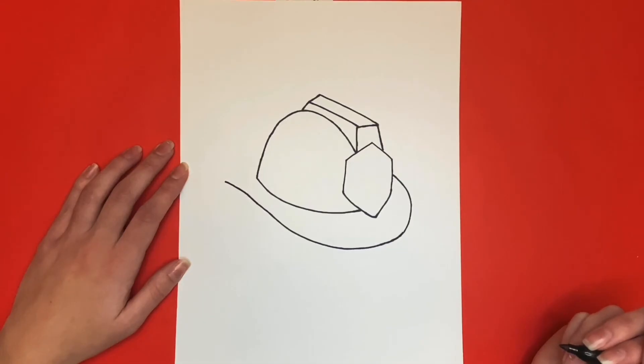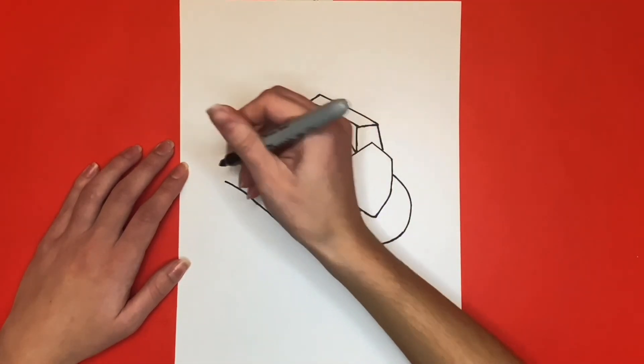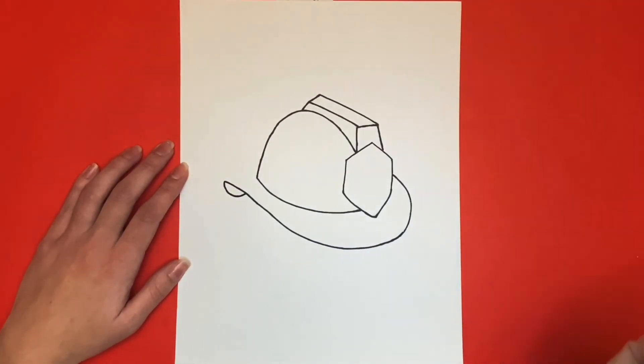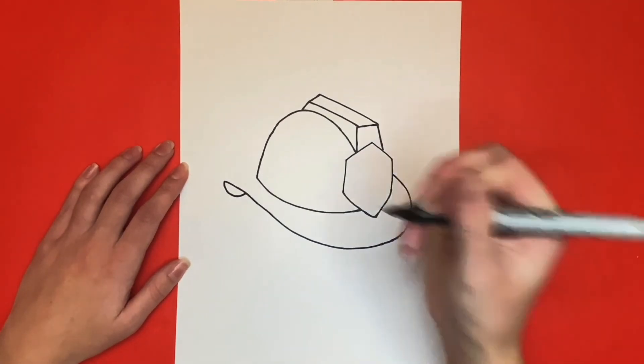Now underneath the line that we just drew towards the back we're going to draw a half circle. Then we'll draw a small line that connects the rim to the body of the hat.